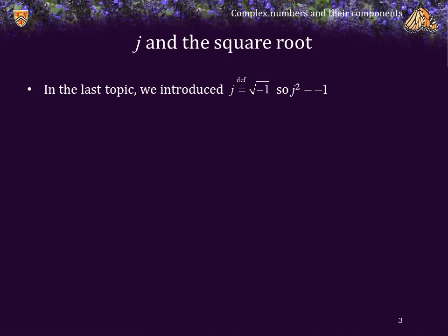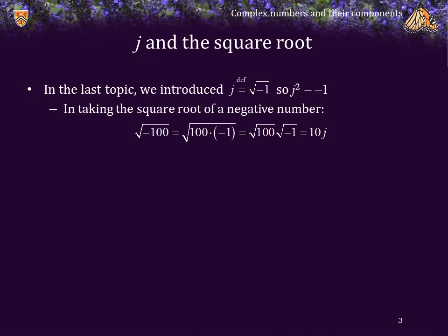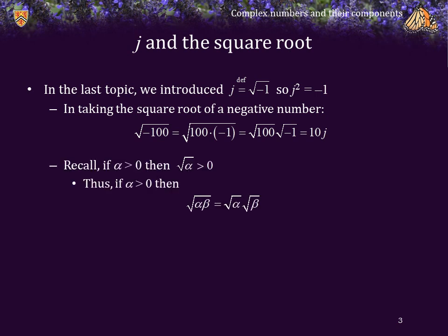Recall that in the last topic we introduced j as being defined as the square root of negative 1, so j squared is equal to negative 1. In taking the square root of a negative number, we see that for example the square root of negative 100 can be written as the square root of 100 times negative 1. The square root of 100 is positive, so it can come out, giving us the square root of 100 times the square root of negative 1, which equals 10j.